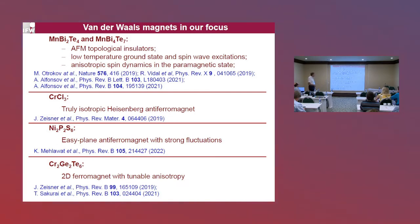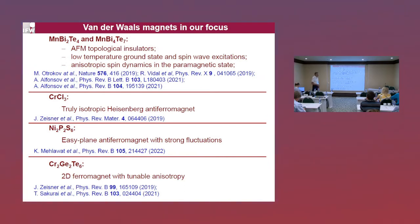Finally, the very prominent material studied quite extensively in the recent past is chromium germanium telluride. We provide pertinent evidence that it is a truly two-dimensional ferromagnet with tunable anisotropy.